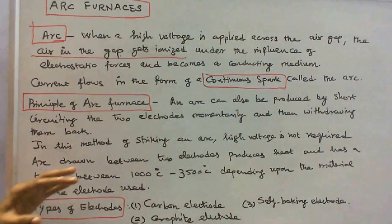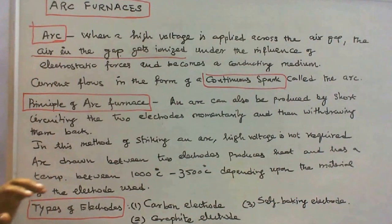What are the types of electrodes? Number one: carbon electrode. Number two: graphite electrode. Number three: self-baking electrode.